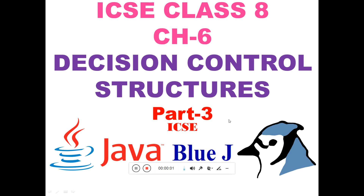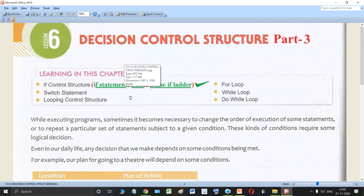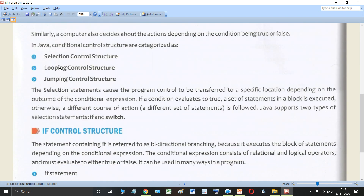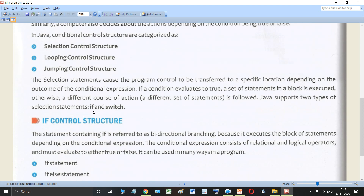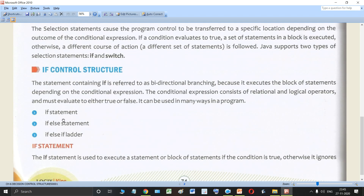Hello dear students of class 8. Today we are going to study part 3 of the chapter decision control structures in Java. In this part we are going to talk about the switch statement in Java. As you know, selection control structure in Java has two main types: the if control structure and the switch control structure. The if control structure contains the if statement, if-else statement, and if-else-if ladder. We have completed the if control structure, so now we move on to the switch statement.